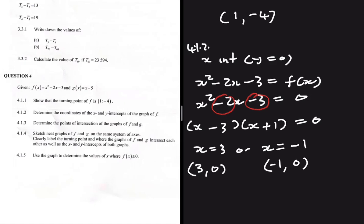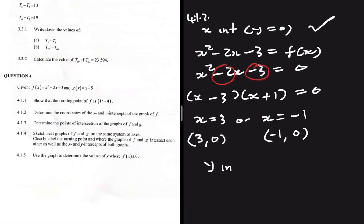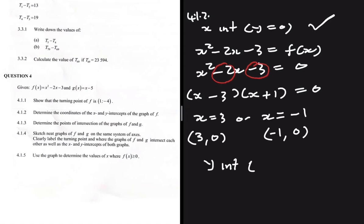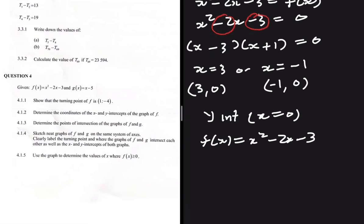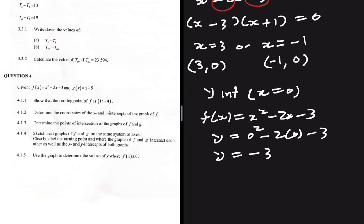For the y intercept, we let x equal 0. Substituting into f(x) equals x squared minus 2x minus 3, we get y equals 0 squared minus 2 times 0 minus 3. So y equals minus 3. That is our y intercept at (0, minus 3).